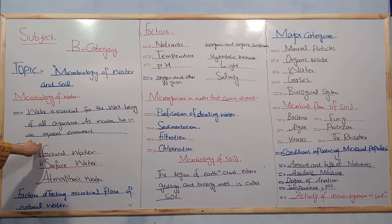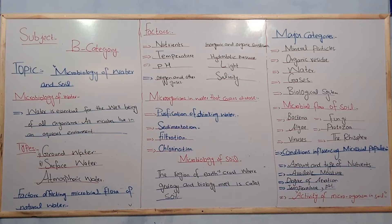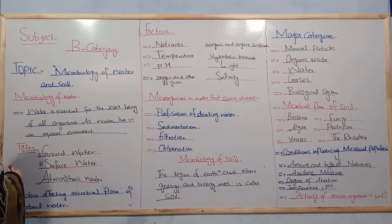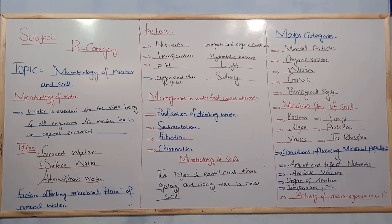If we talk about ground water, ground water is basically sterile. It is water under the earth's surface which is filtered. Bacteria and other particles are removed due to filtration because the water is under the earth's surface. The process of filtration removes bacteria and dust particles, and the water is purified through this natural mechanism.